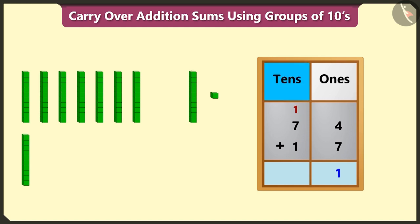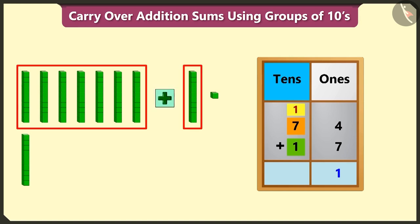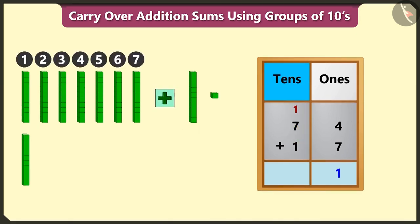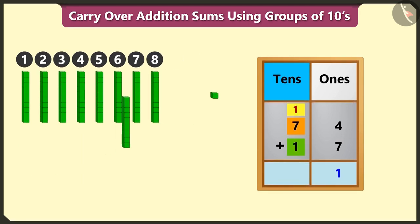Now we have to add the numbers in the tens box to the carry over number. Adding seven to the carry over number one will equal eight, and adding one to eight will equal nine.